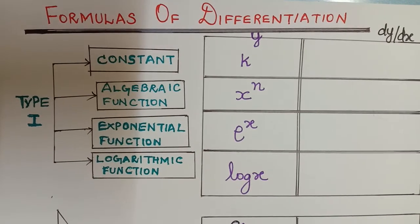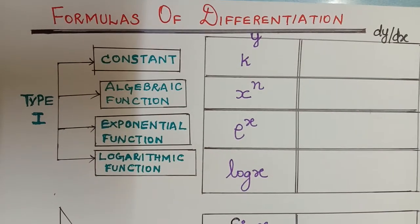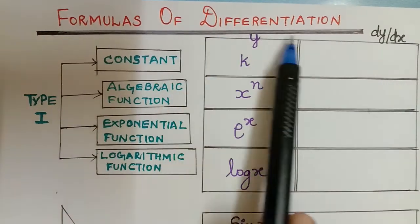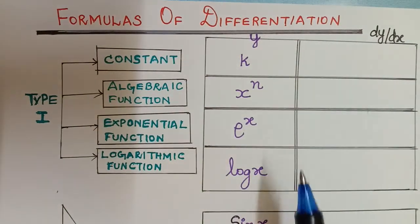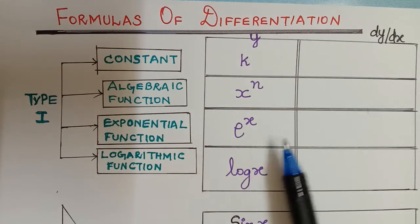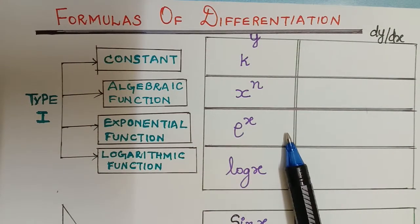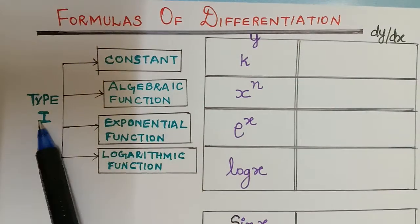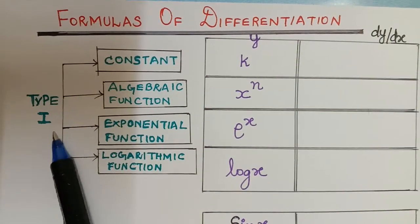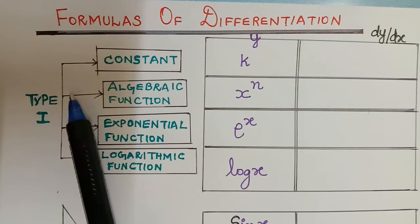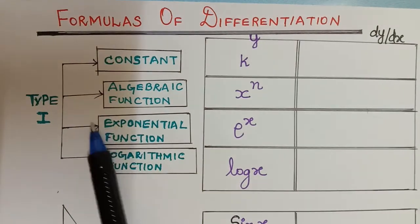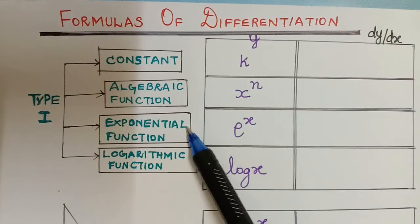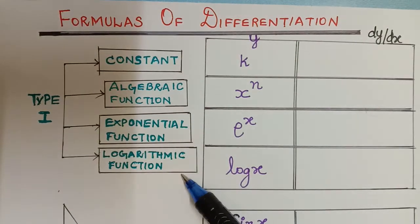Hello students. In this video we are going to learn about the formulas of differentiation. These are the basic formulas of differentiation. To make it simple, we categorize these formulas into four different types, where type 1 is again categorized as constant function, algebraic function, exponential function, and logarithmic function.